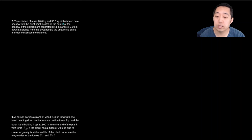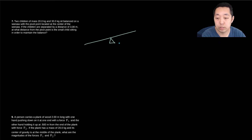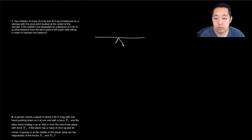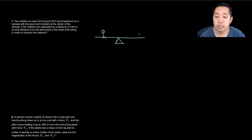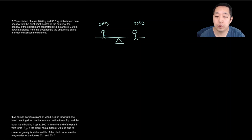Next problem: two children with masses 20 kg and 30 kg sit balanced on a seesaw with the pivot at the center. If the children are separated by a distance of 3 meters — the 20 kg child on one side, the 30 kg child on the other — what distance from the pivot point is the smaller child sitting to maintain balance?